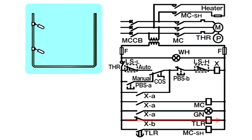Here the pump is operated immediately. As the push-button switch P-B-S-A is pressed, a current is passed from P-B-S-A to changeover switch C-O-S, to push-button switch P-B-S-B, to high-level float switch L-S-H, and to the coil of control relay X. Thus, the coil of X is excited.